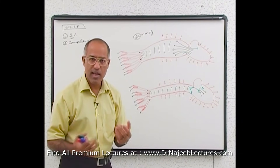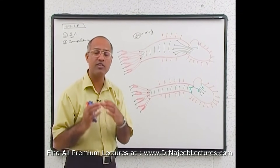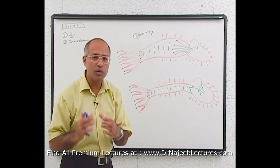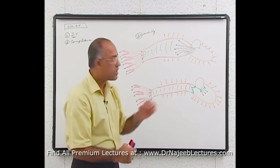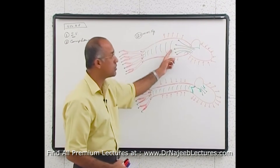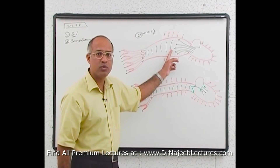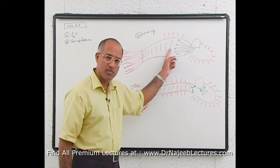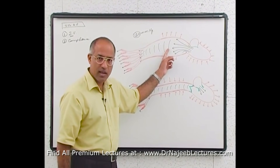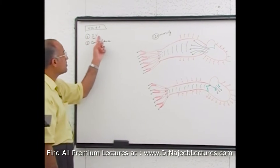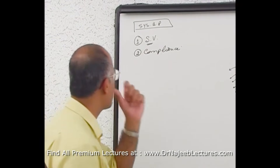As your age increases and your arterial tree becomes stiff and hardened, it reduces its stretchability and distensibility. In senior citizens, when arteries become stiffened, can the aorta stretch out? No. If the aorta cannot stretch out, the stroke volume will produce very high systolic blood pressure. So as the aorta becomes less compliant with age, systolic blood pressure will be more. In summary: if you increase stroke volume, systolic blood pressure goes up; or if you decrease compliance, systolic blood pressure goes up.